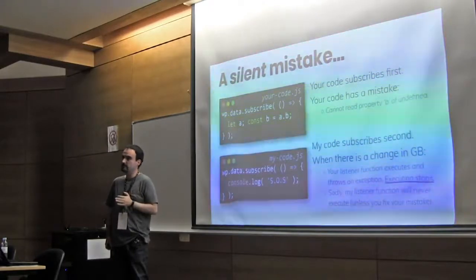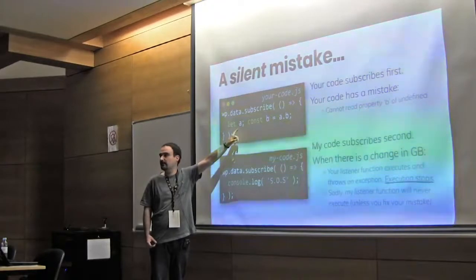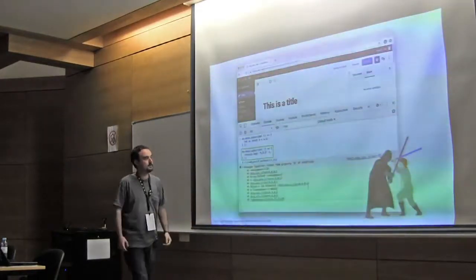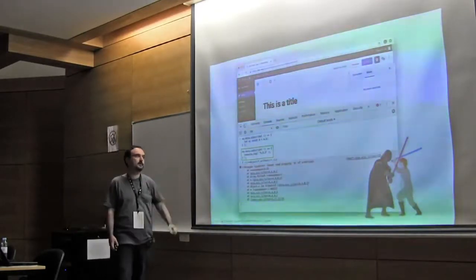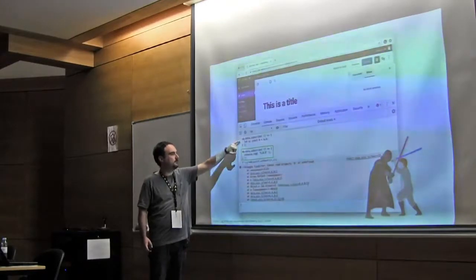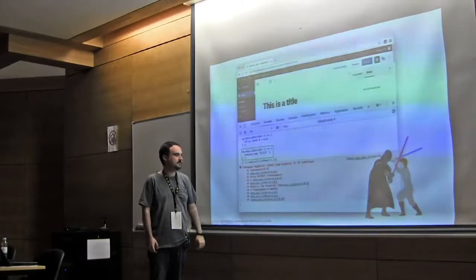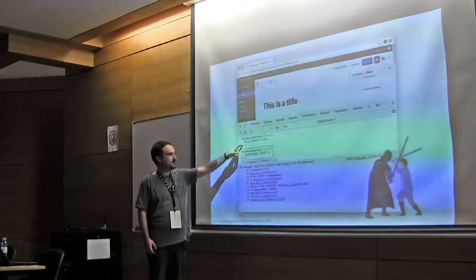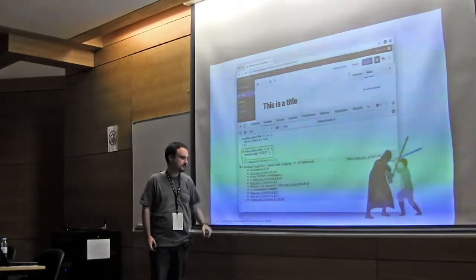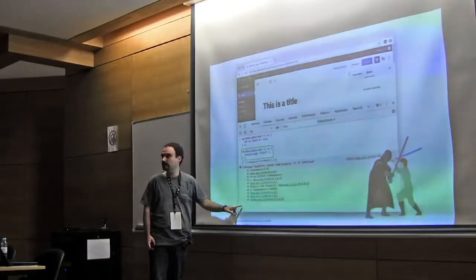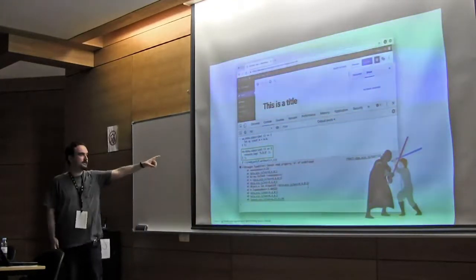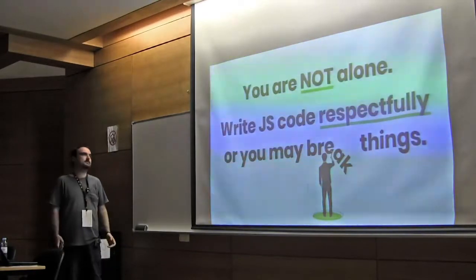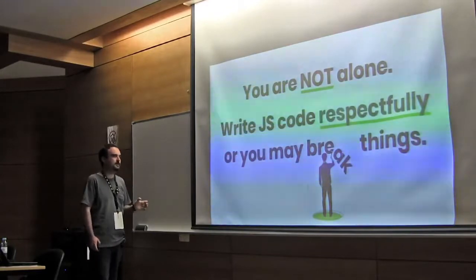The problem here is that any time a change occurs in your WordPress editor, the subscribe method will recover all the registered functions that it has, and will execute any of them in order. So, it will execute yours. Yours will throw an exception. And this will stop execution. So, my code will never run. You can even try it in your laptop. Just open the JavaScript console. Copy the two subscribe calls. And you'll see that if you just write something or click on something in the editor, your function will be executed. It'll throw an error. But the console.log will never go out. So, be careful with writing JavaScript. Because in this case, the subscribe function is shared space. So, my advice is that you are not alone. Please write JavaScript code respectfully or you may break things. Ok?